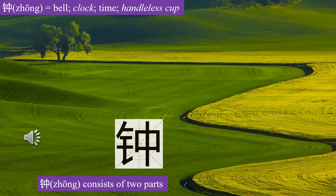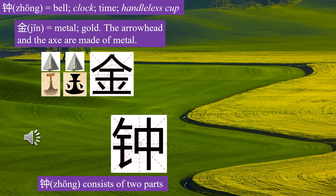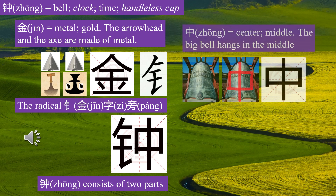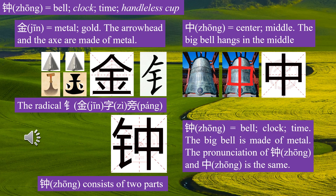Character Zhong consists of two parts. Jin means metal, gold. The arrowhead and the axe are made of metal. The radical Jin zi pang means metal. Zhong means center, middle. The big bell hangs in the middle. Zhong means bell, clock, time. The big bell is made of metal.